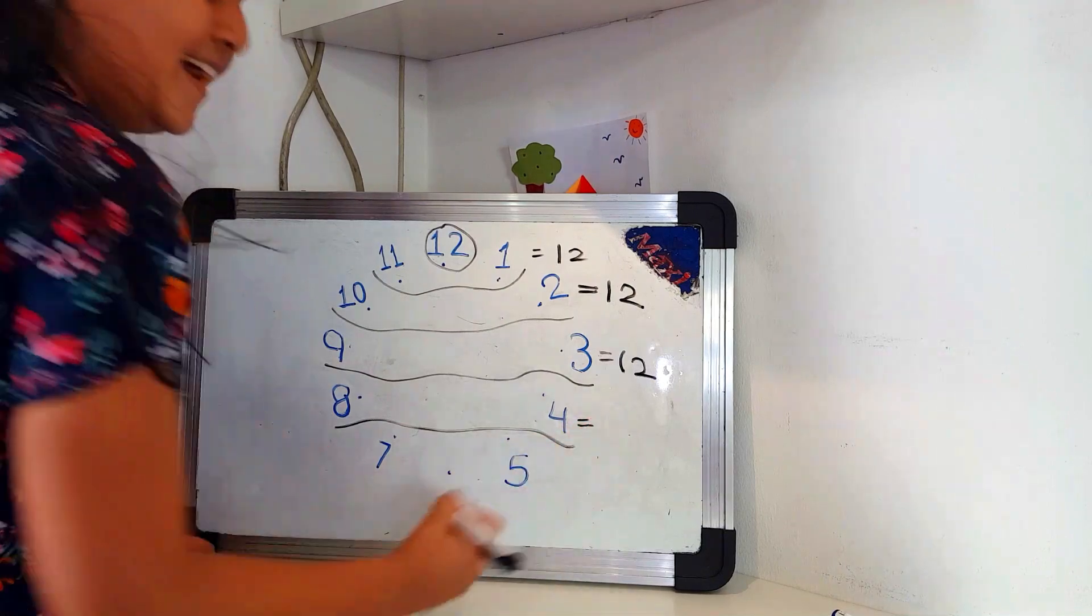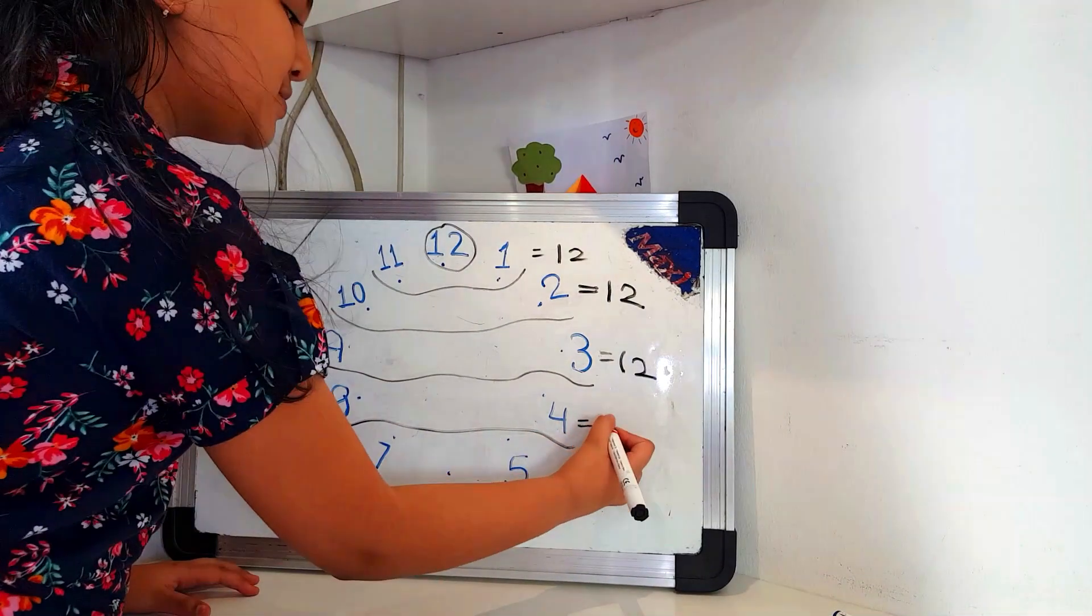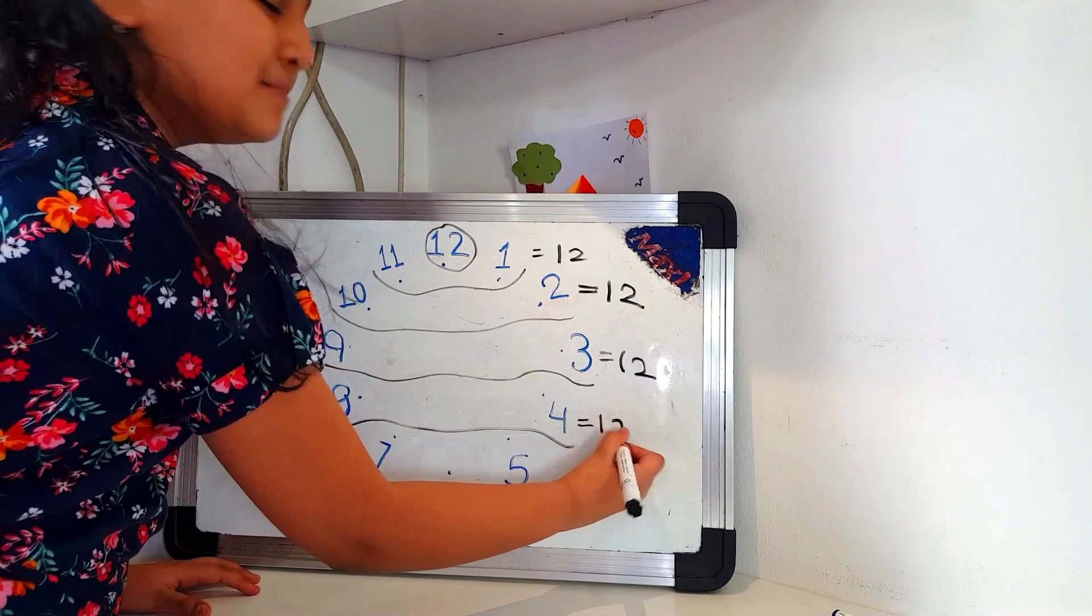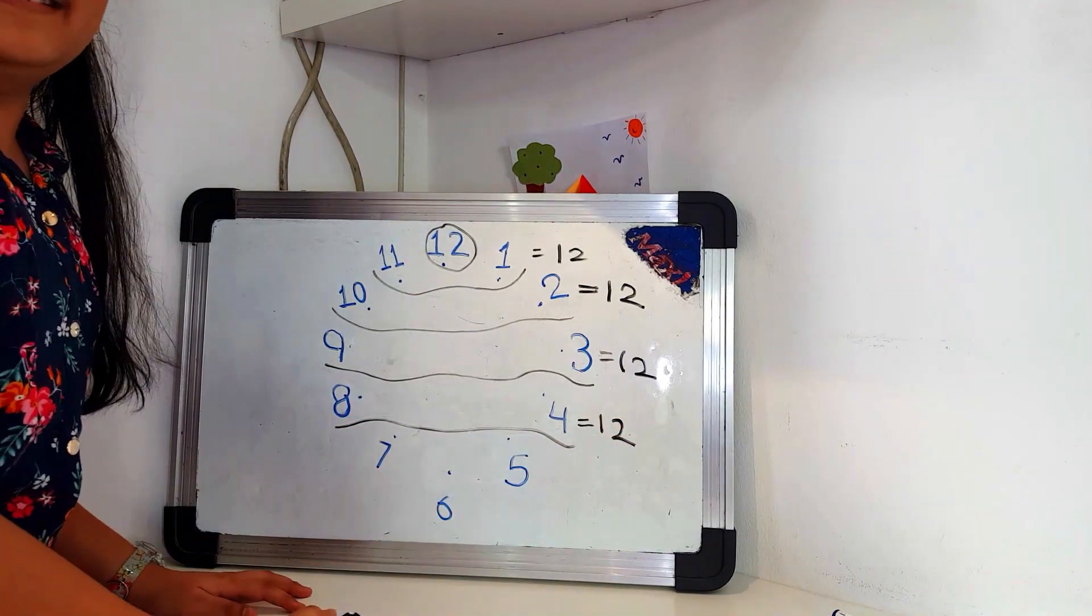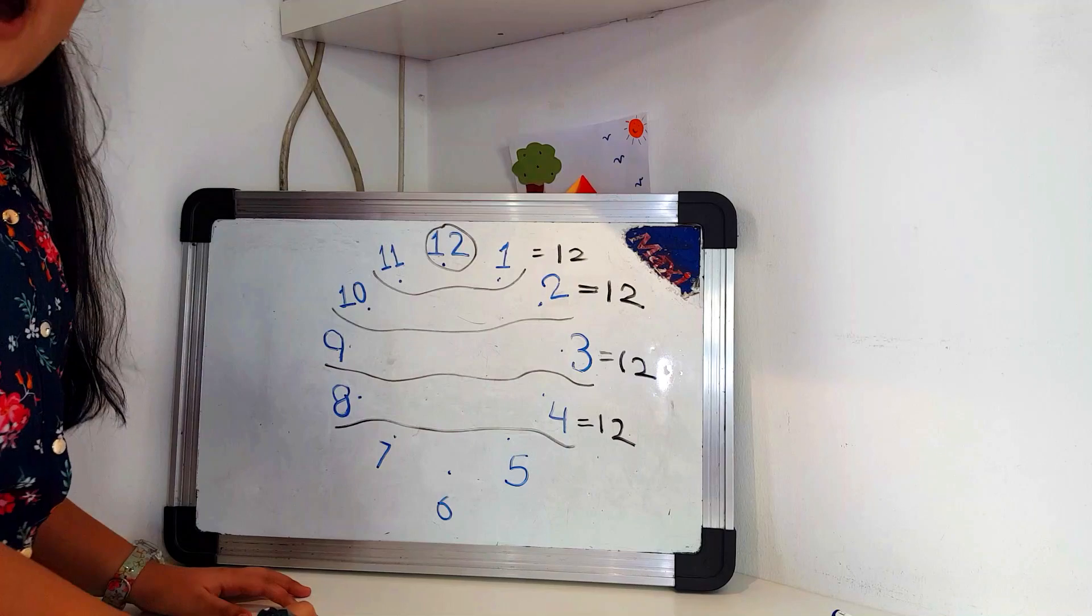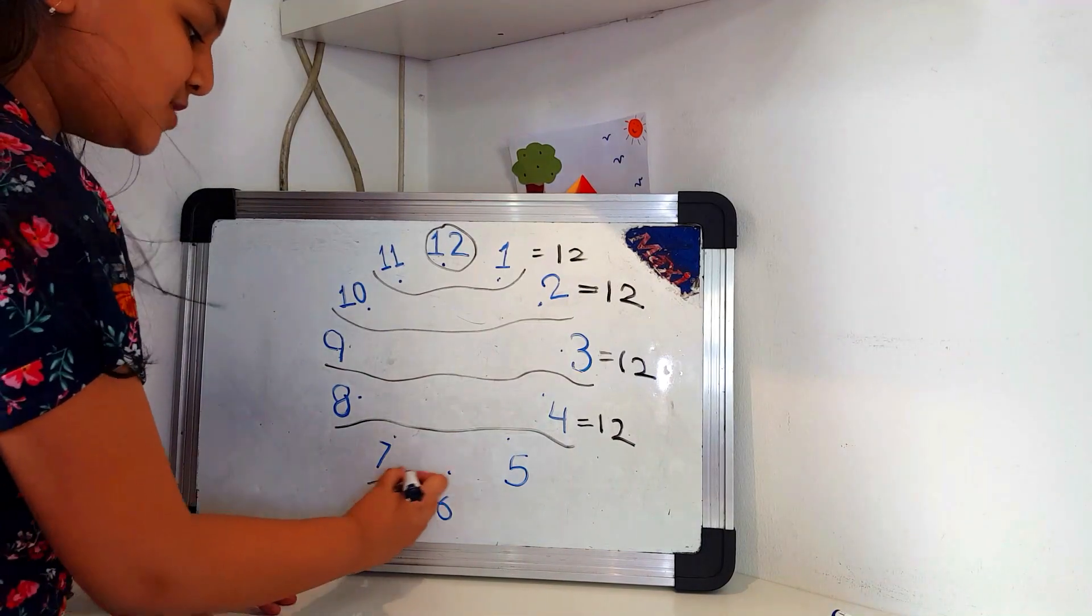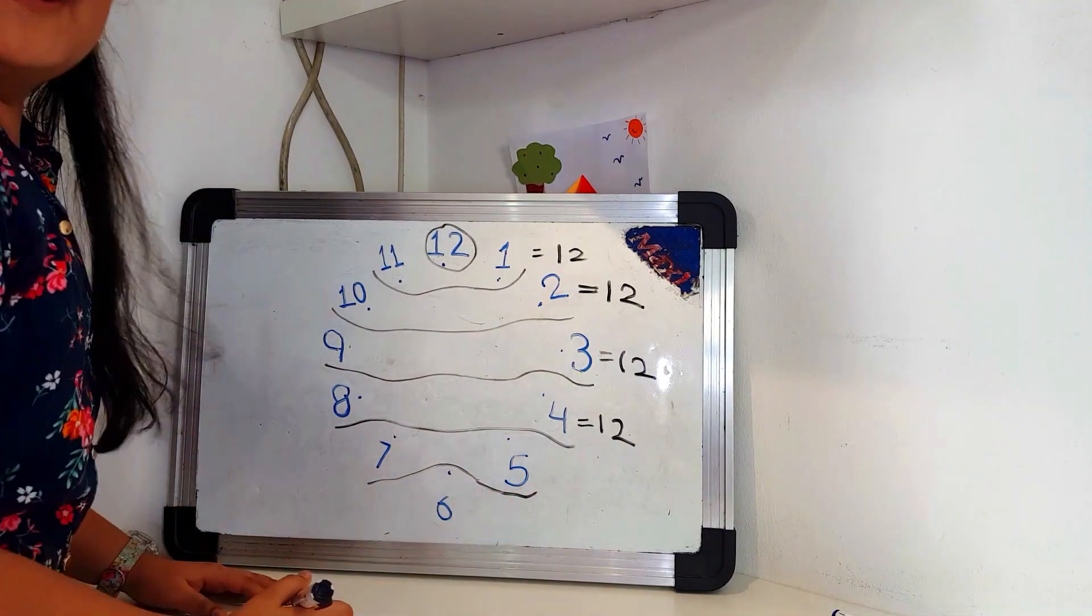8 plus 4? 12. Is also equal to 12. Thanks to my boredom, we are getting to learn nice patterns between the numbers of the clock. 7 plus 5? 7 plus 5 is also 12.